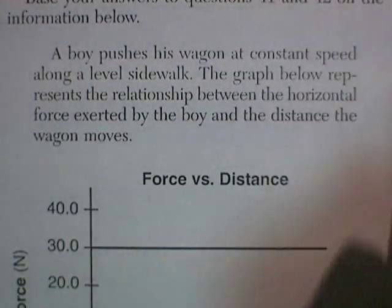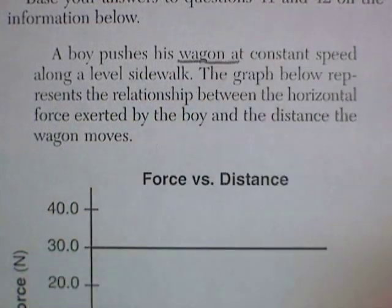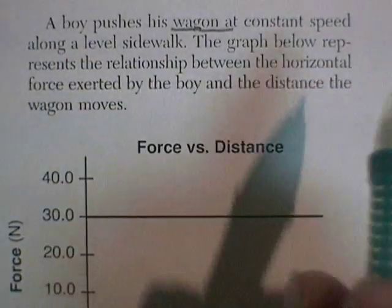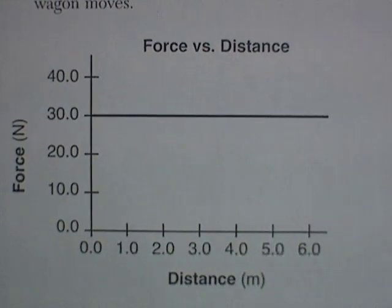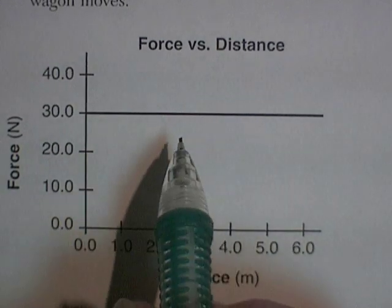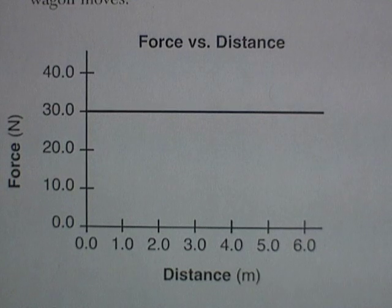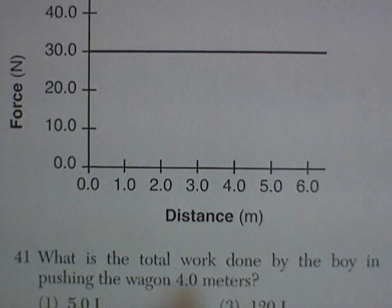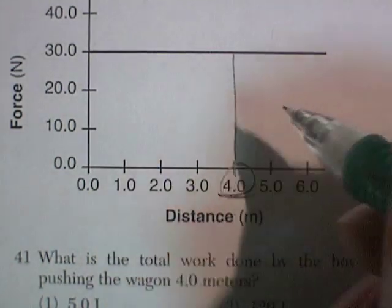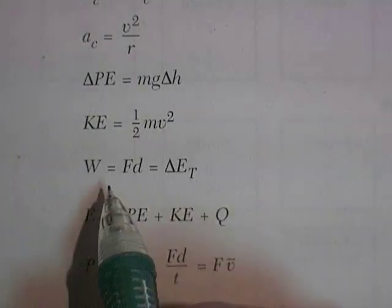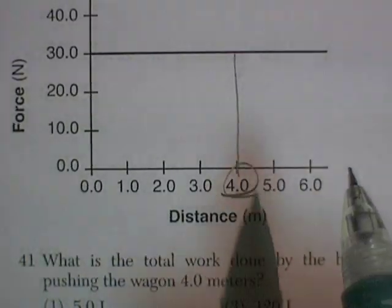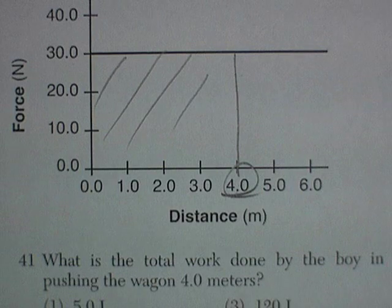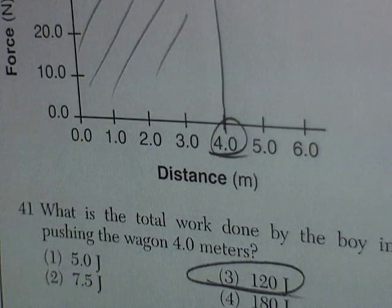Questions 41 and 42 refer to a boy pushing his wagon at a constant speed along a level sidewalk. The graph shows the relationship between horizontal force and distance. He exerts the same force for the entire trip. What is the total work done by the boy pushing at 4 meters? Work is force times distance, which is the area under the graph: 30 times 4 equals 120 joules.